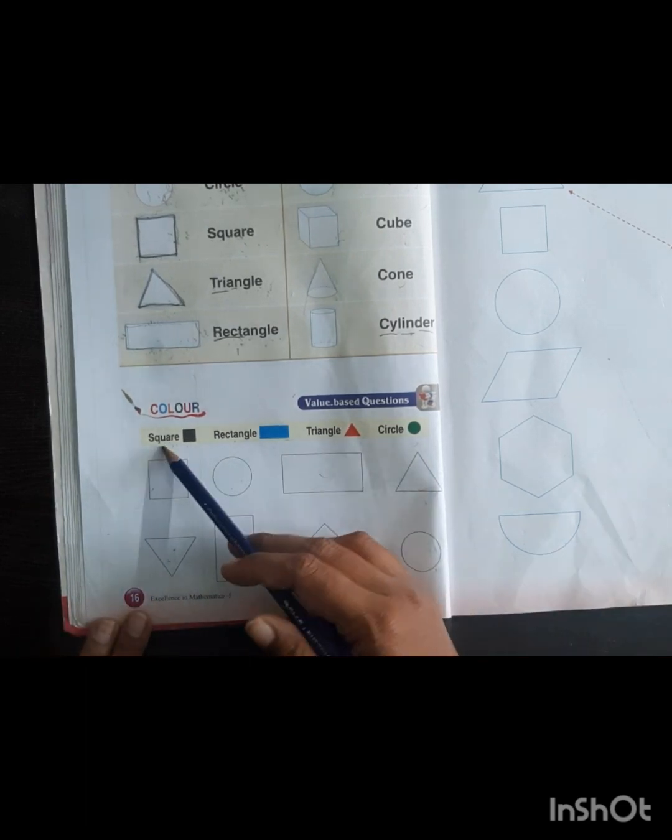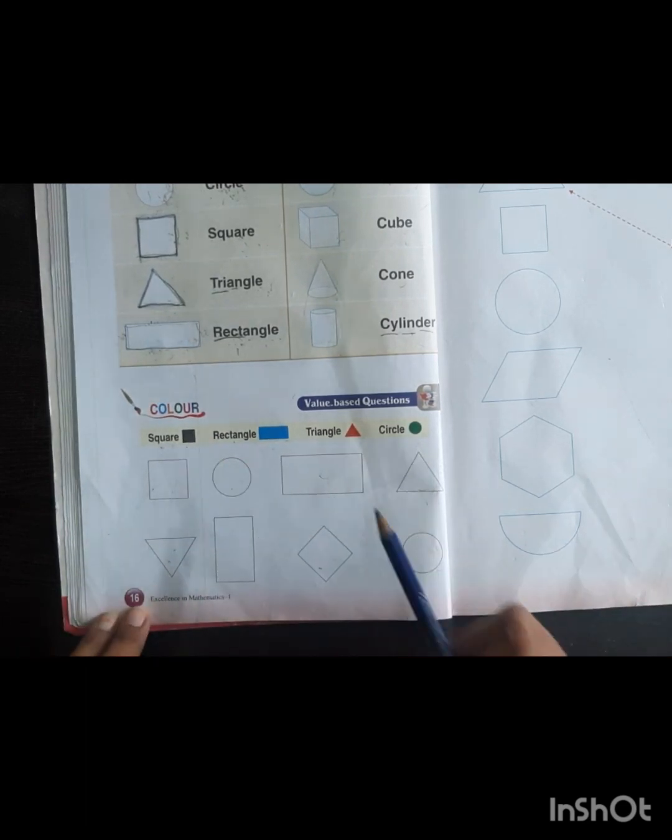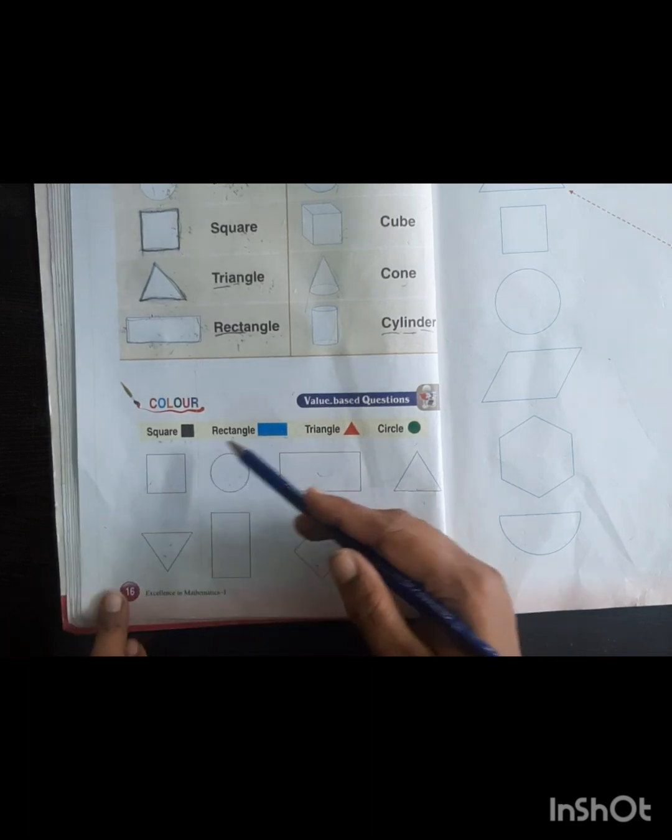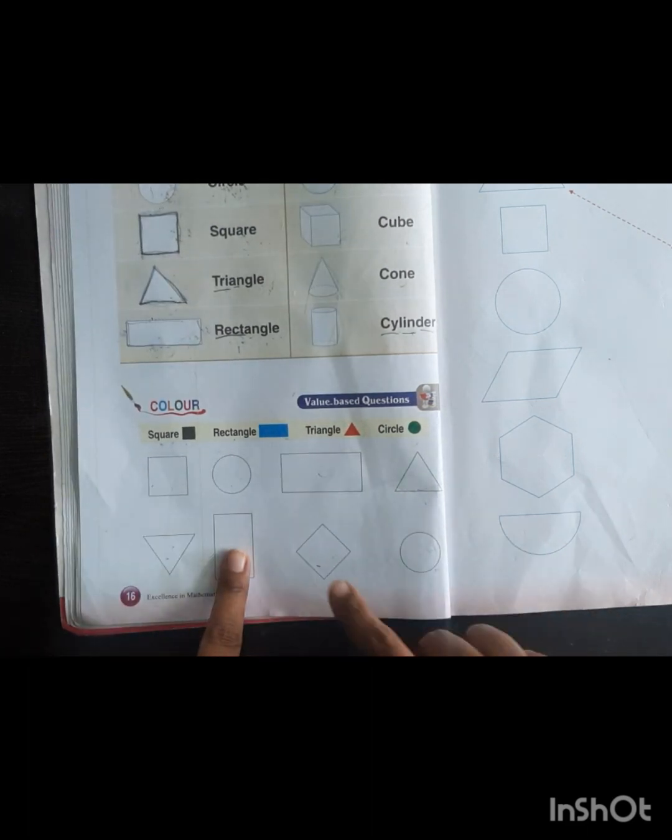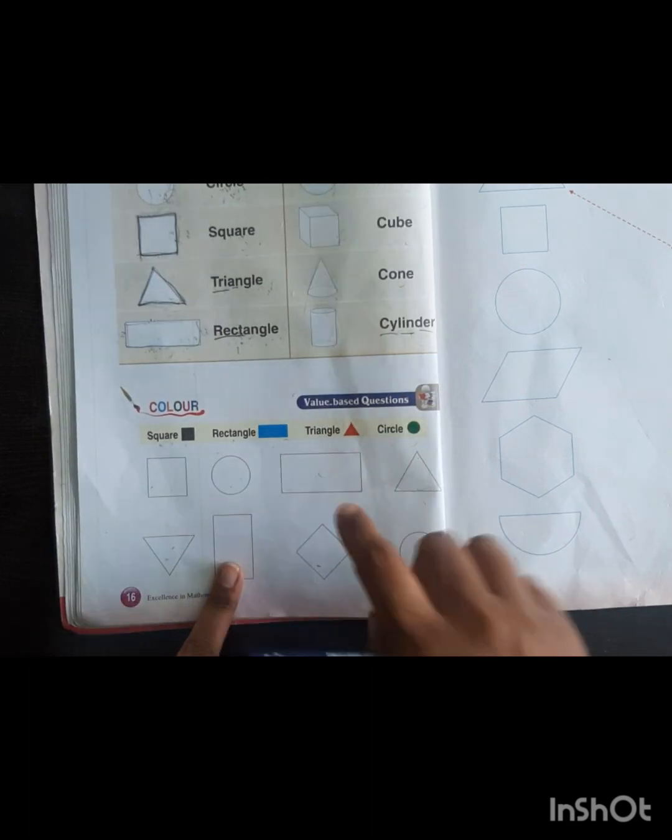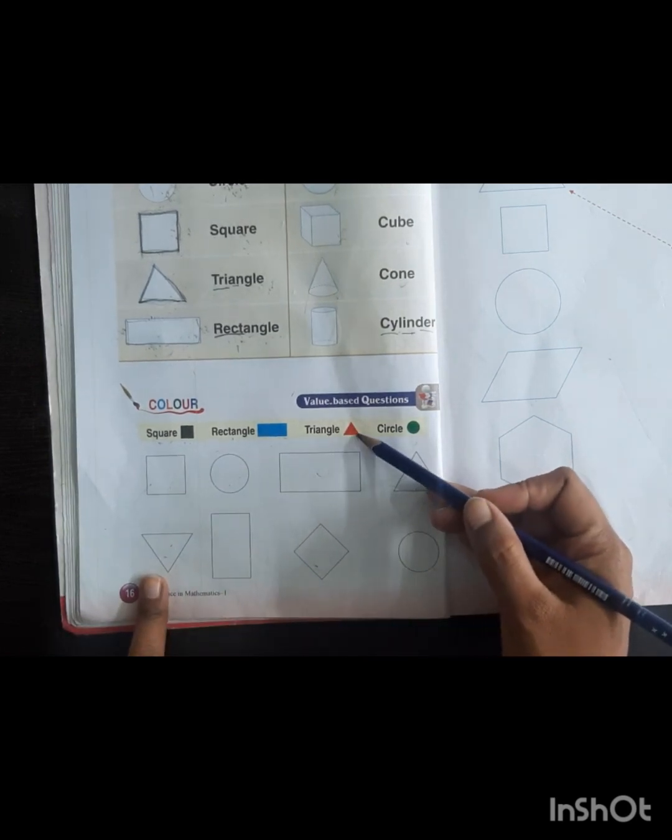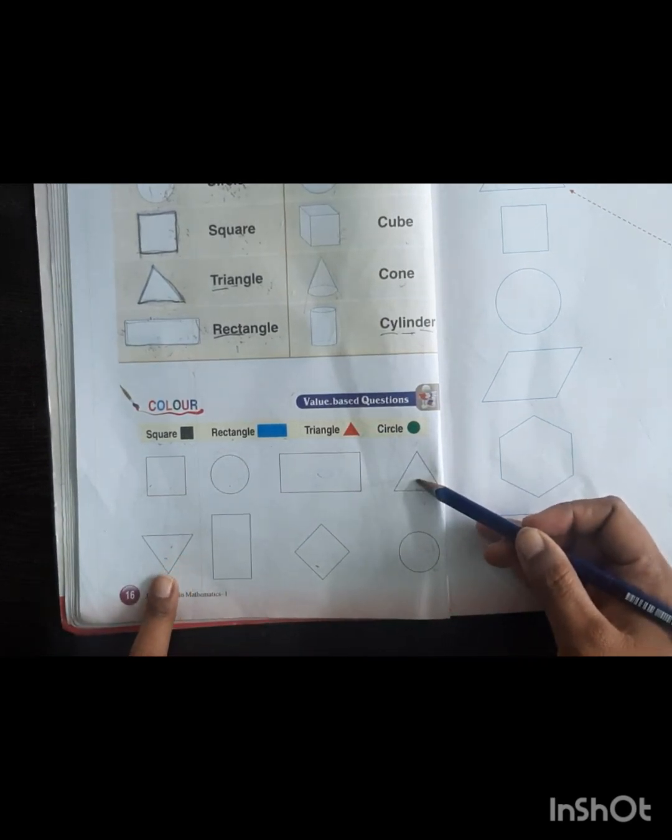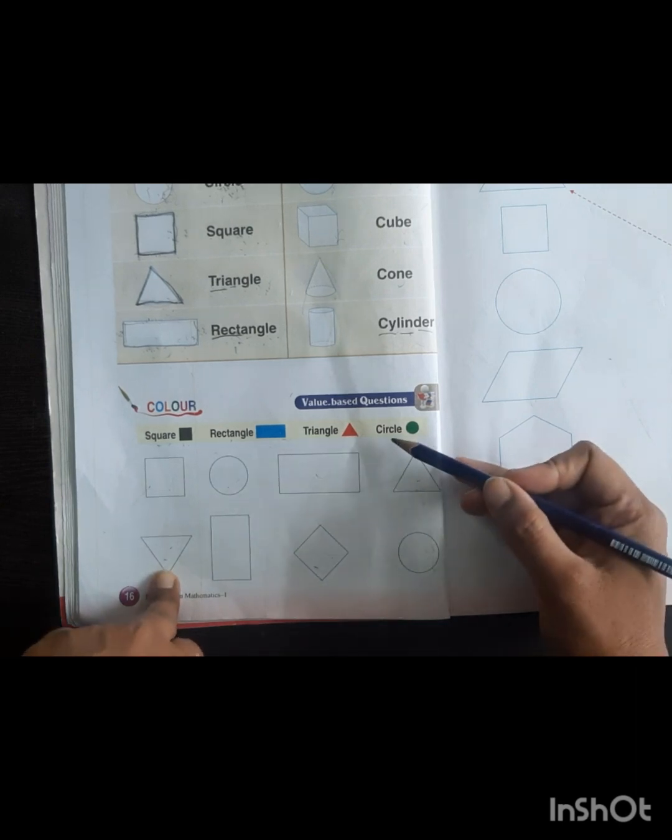Square has black color, so we will fill black color in given squares. Rectangle has blue color, so we will fill blue color in given rectangles. Triangle has red color, so we will fill red color in given triangles.